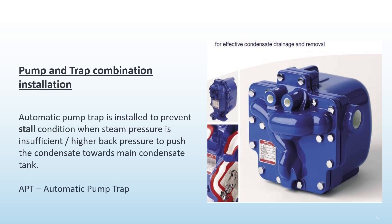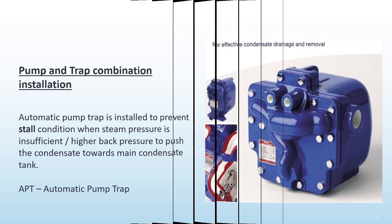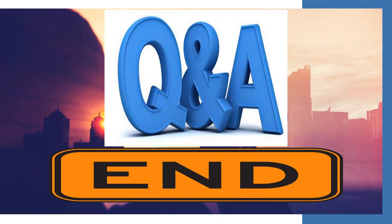A new and effective solution to remove condensate is the automatic pump trap, installed to prevent stall conditions when steam pressure is insufficient or back pressure is too high to push the condensate towards the main condensate tank. Finally, let's move on to the question and answer section. Thanks to everyone for participating in this tutorial — see you next time.